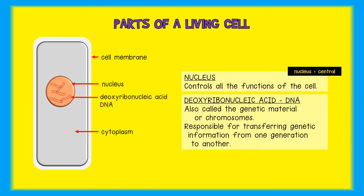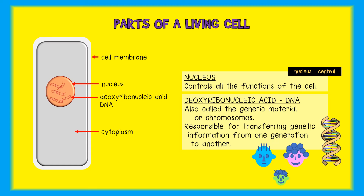The DNA is found inside the nucleus. The term DNA is the abbreviation for deoxyribonucleic acid — that's a long word! The DNA is also known as the genetic material or chromosomes of a cell. The DNA is very important because it transfers information about a living organism from one generation to another. In other words, the DNA is responsible for the transfer of characteristics from parent to offspring. It is because of DNA that you have your father's ears and your mother's smile.